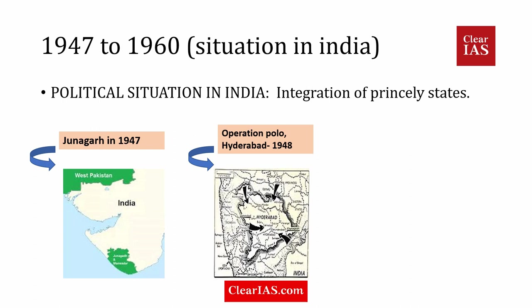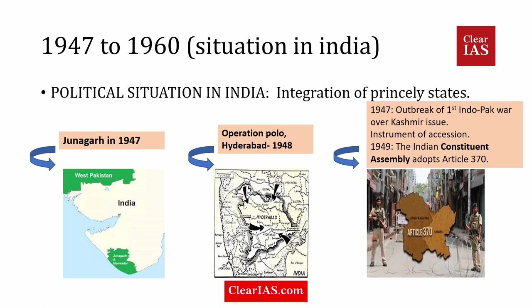The most important and still-discussed state was Kashmir. In 1947 there was the outbreak of the first India-Pakistan war over the Kashmir issue. Kashmir signed the Instrument of Accession and agreed to join India if protected. In 1949, the Indian Constituent Assembly came up with Article 370, which gave special provisions for the state of Jammu and Kashmir, and Kashmir got related to India.